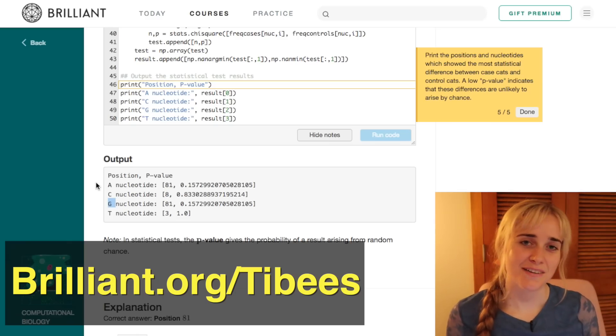So if you would like to work through the rest of this at your own pace, you can go to brilliant.org/tibbys and sign up for free. Also, the first 200 people to do so can get 20% off an annual premium subscription. Thank you to Brilliant for sponsoring this video, and thank you for watching.